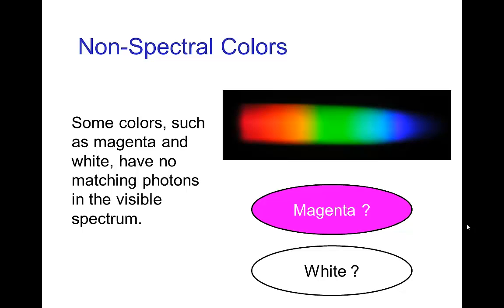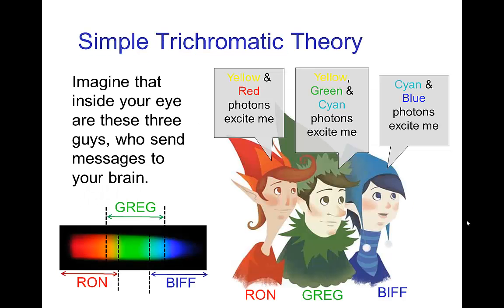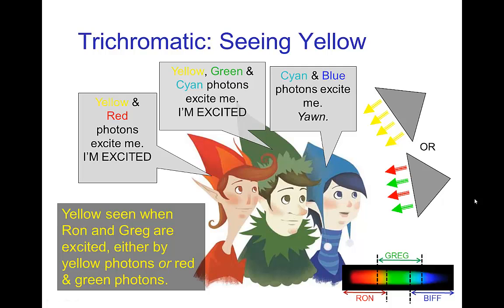To explain the connection between the spectrum and the colors we perceive, the trichromatic theory was developed. It says that when we perceive a color from a spectrum, it's as if we have three receptors in our eye — we'll call them Ron, Greg, and Biff — and they are sensitive to different parts of the spectrum. Ron is sensitive to the red and yellow part, Greg to the middle part (yellow, green, cyan), and Biff is sensitive to cyan and blue. Let's see how this works for metamerism.